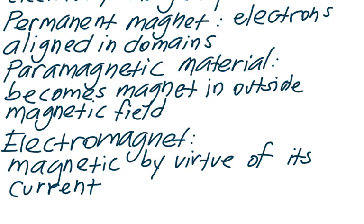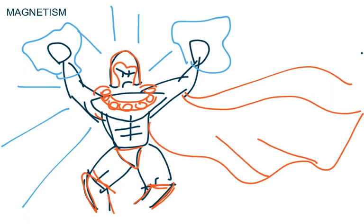Finally, electromagnets are magnetic by virtue of their current. They're very handy because you can just increase the current to increase the strength of the magnetic field and make really strong magnetic fields when needed.